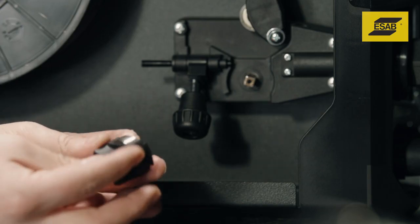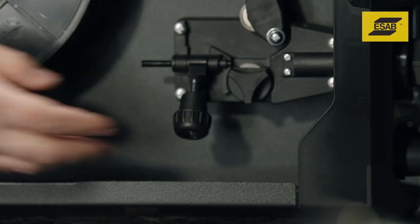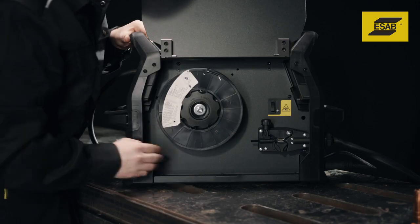Align the keyway on the feed roll with the key located on the shaft and push the feed onto the shaft. Reinstall the feed roll retention knob.